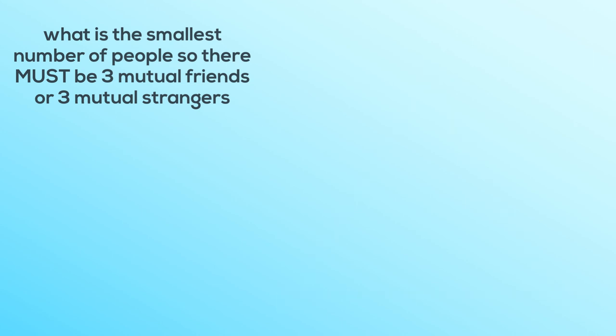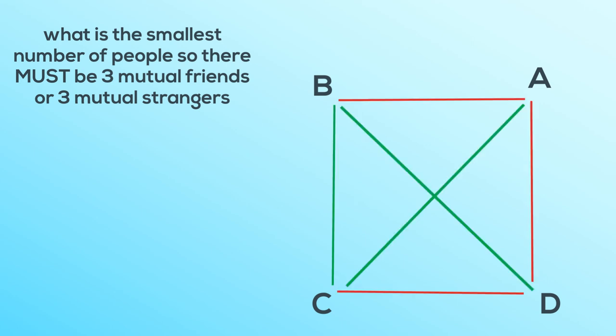So we go to four. So I'm going to do this one for you, but I'd like you to have a go at five. So four, here's a situation where we've got four people. And we don't have three mutual friends and we don't have three mutual strangers. No matter which three people you pick, they won't be mutual friends and they won't be mutual strangers. So clearly the answer to the question is not four.